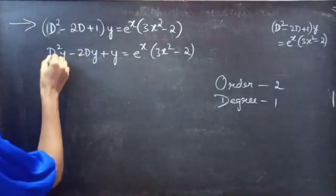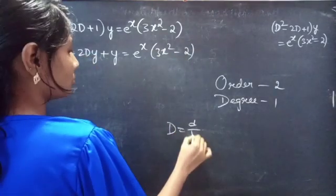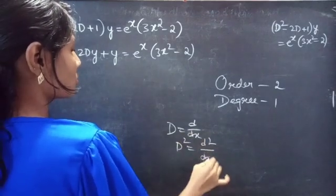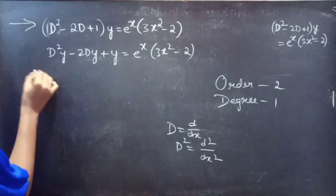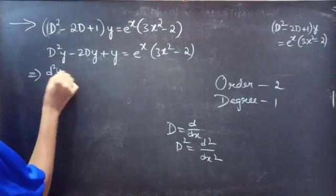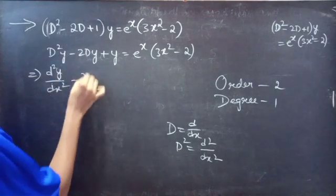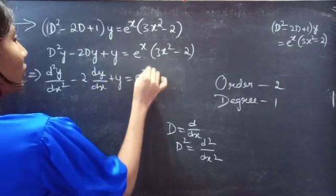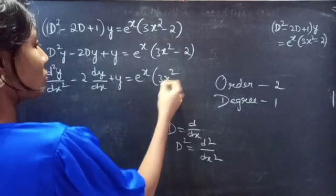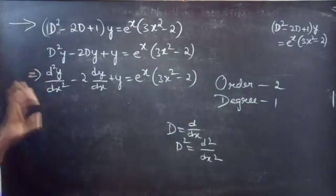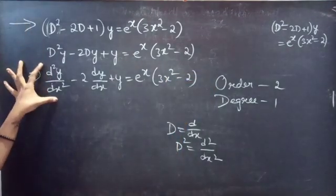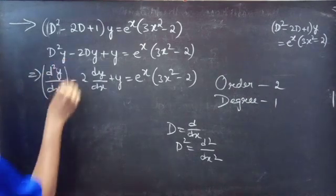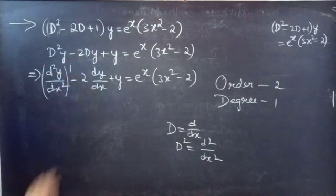We know that D is a differential operator. Then D² will be d²/dx². Now, we can write our equation as d²y/dx² - 2·(dy/dx) + y = e^x · (3x² - 2). Here, d²y/dx² is the highest derivative, so our order will be 2 and the degree is 1.